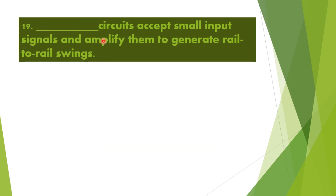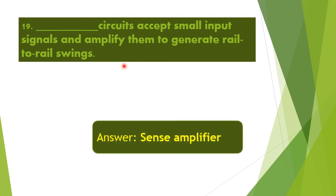Next question: What circuits accept small input signals and amplify them to generate rail-to-rail swings? The correct answer is sense amplifier circuits, which accept small input signals and amplify them to generate rail-to-rail swings.